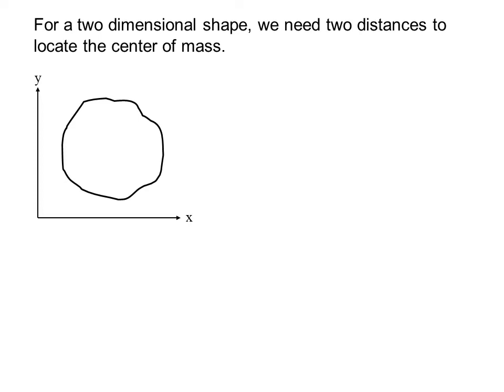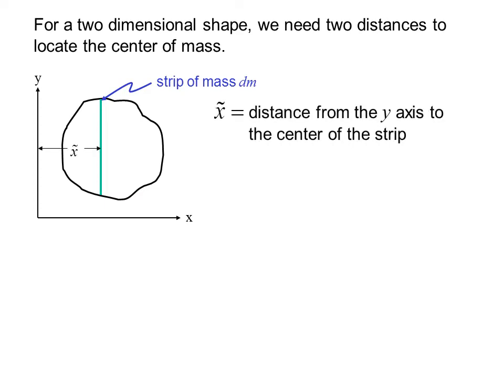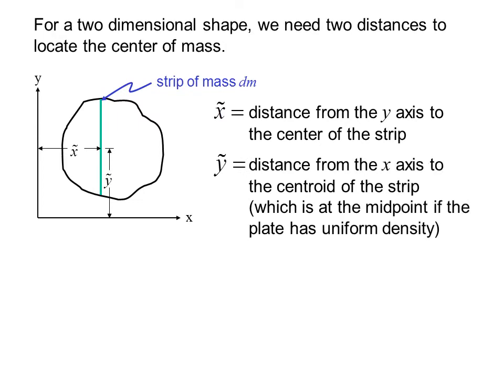For a two-dimensional shape, we need two distances to locate the center of mass. If we imagine a thin strip of mass dm, that is a small change in mass. x̃ is the distance from the y-axis to the center of the strip. ỹ is the distance from the x-axis to the centroid of the strip, which is the midpoint if the strip has uniform density.